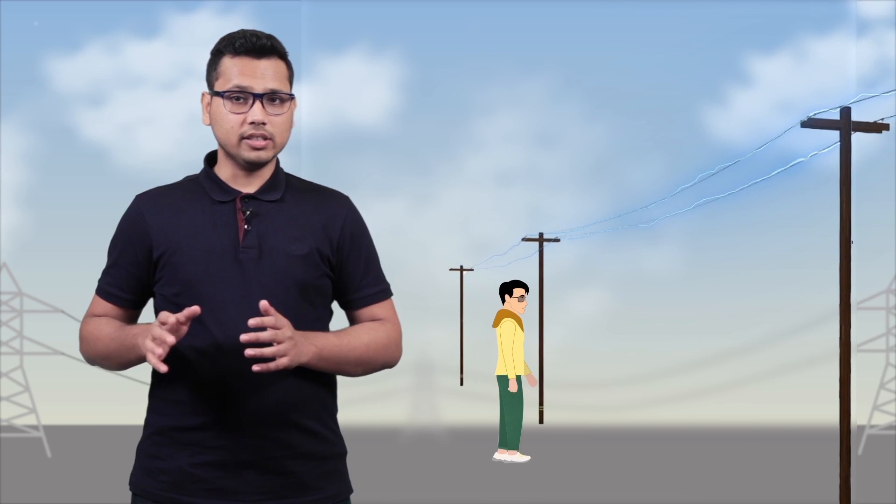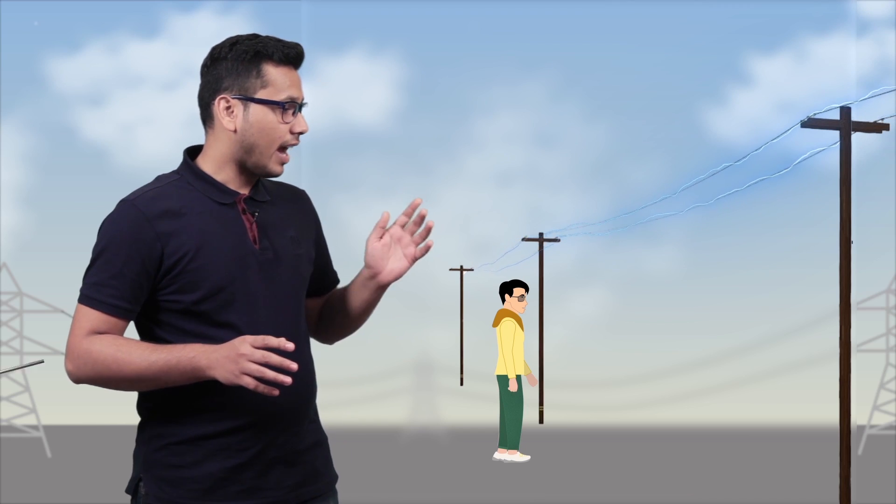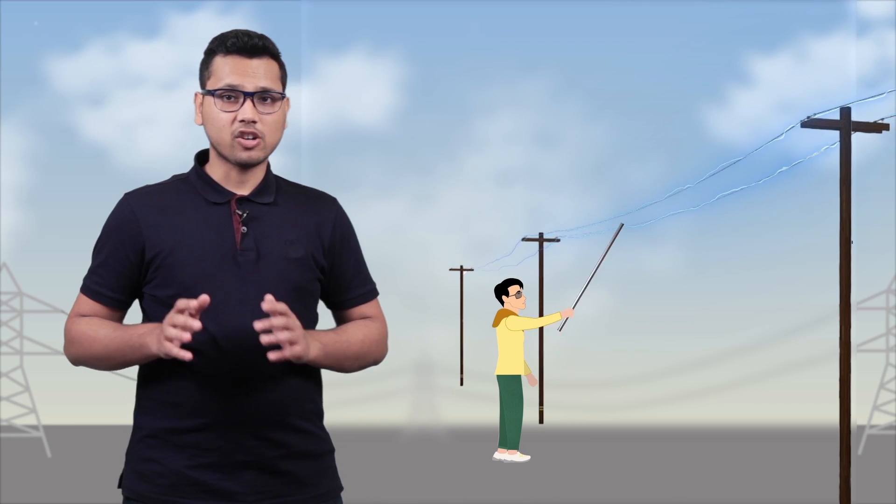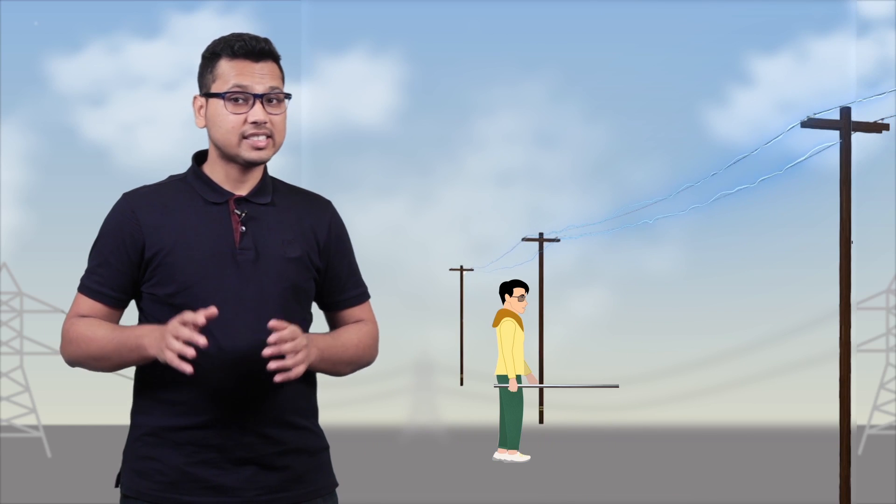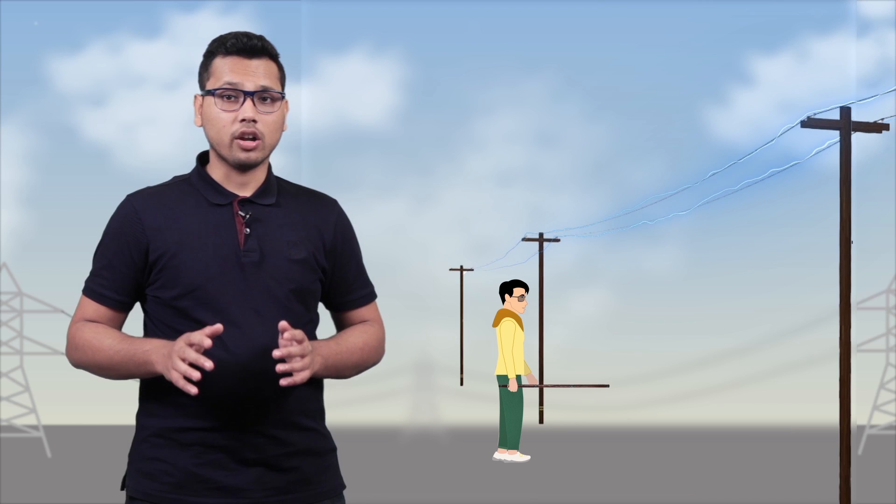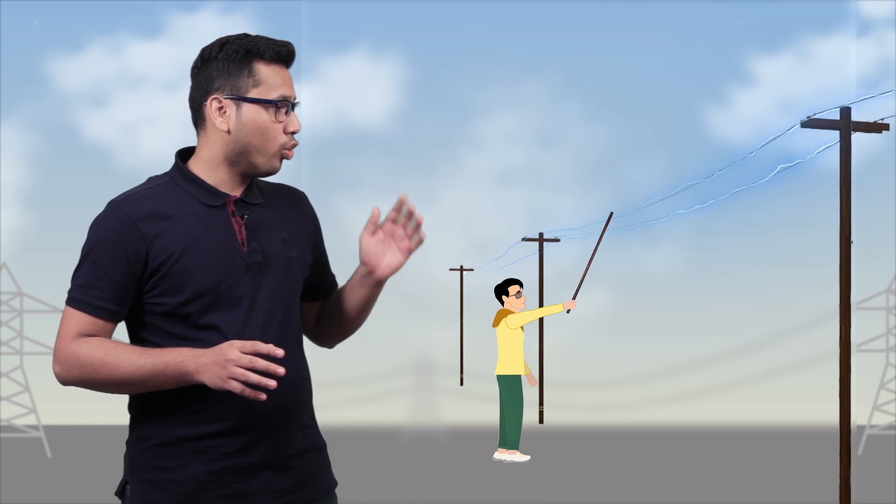You might have also observed another phenomenon with current-carrying wires. If a person touches these wires with a metal rod, he gets a shock, but if he does the same with a wooden or plastic stick, he doesn't get a shock. Why is this?